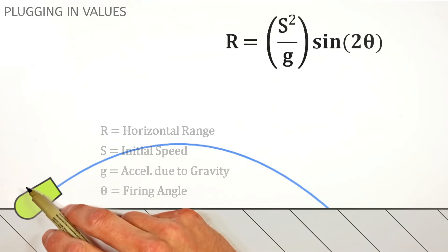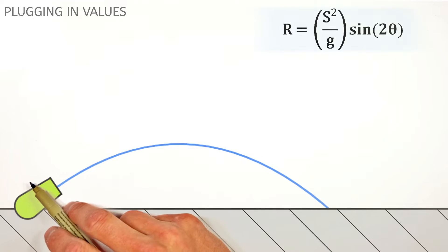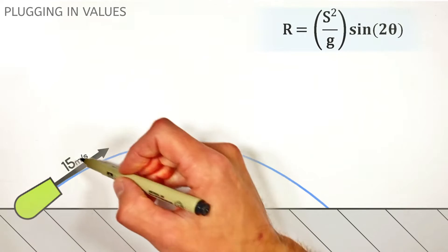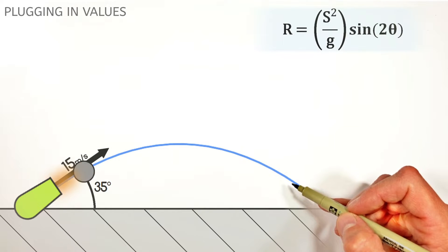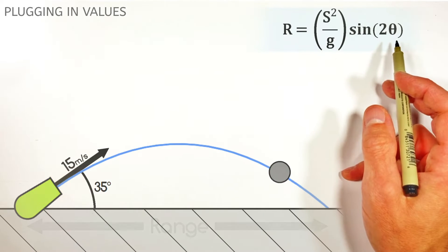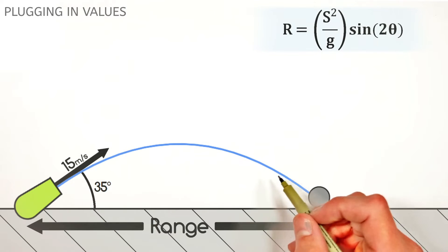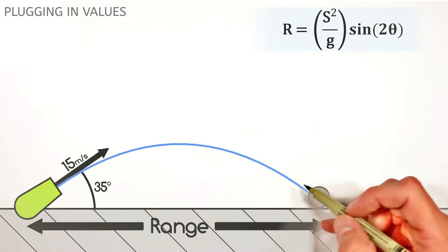So if we take something like a cannon, which is going to shoot a cannonball at 15 meters per second at an angle of 35 degrees above the horizontal axis, we can use this range equation to tell us exactly how far this projectile is going to travel horizontally.